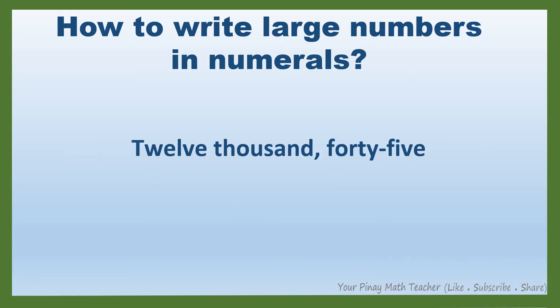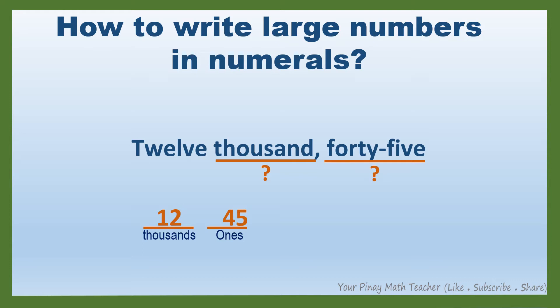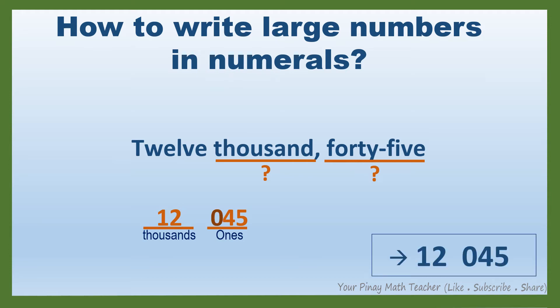Next example: 12,045. In this number, the highest period is the thousands period. So we have two groups of digits, or two periods. How many thousands are there? There are 12. And there are 45 ones. Since in the ones period there are only two digits, we have to put zero before 45. So, this is the numeral for 12,045.